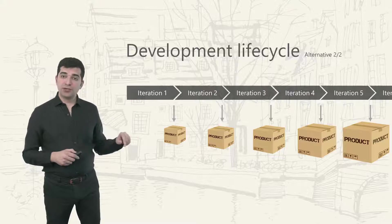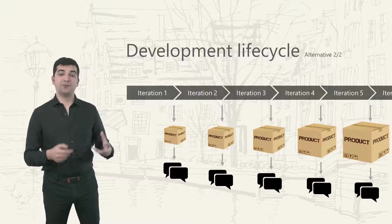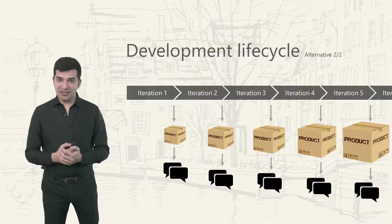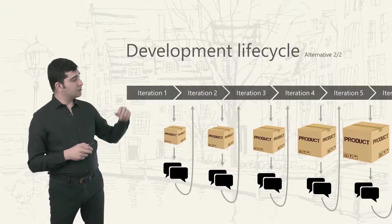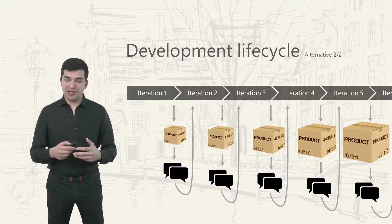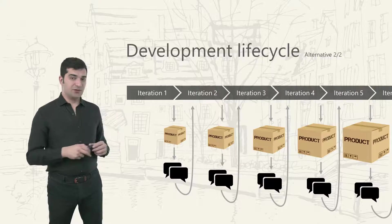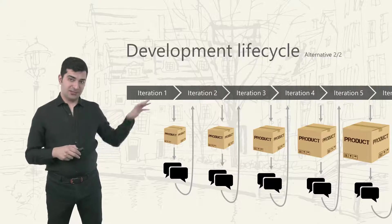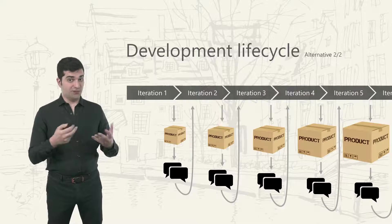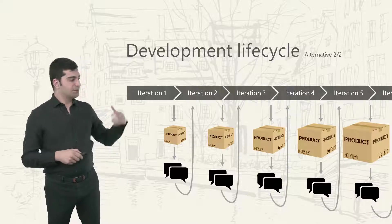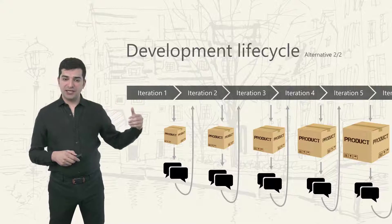Then we will show it to the customer and to the end users, have conversations over that, receive feedback, and using that feedback we will decide about the features for the second iteration. We'll focus on them, run the development processes inside that iteration, create a new version of the product with more features, receive feedback, and do it again and again.